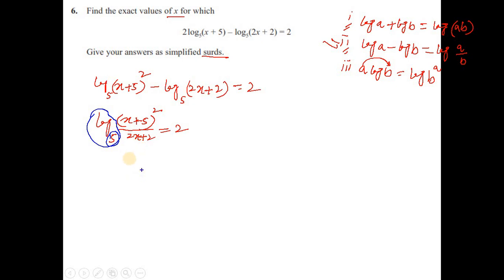That means when I remove this log₅, on the left-hand side we have only (x+5)²/(2x+2), and this equals 2 which goes to the power of 5.